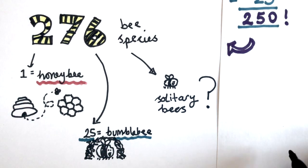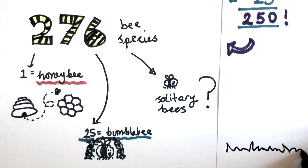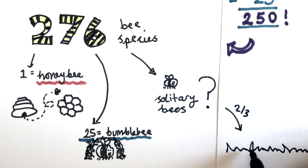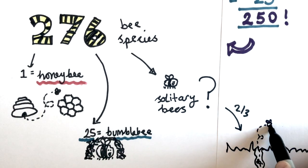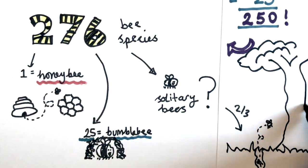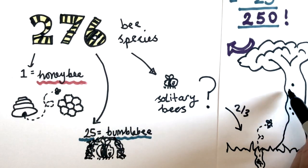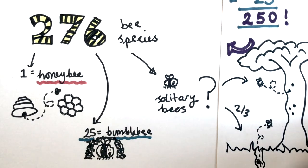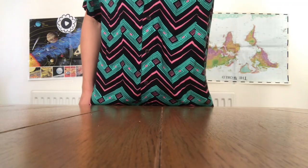Solitary bees like to live alone. Two thirds of them burrow in the ground and just need some open soil, which we can make by digging up a bit of grass. And one third of them nest above the ground in little holes. These are harder to come by, so we can make some for them. Here's what you'll need.